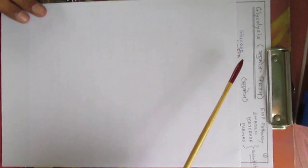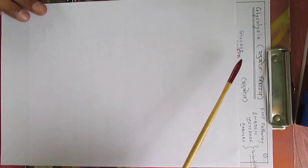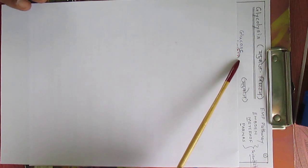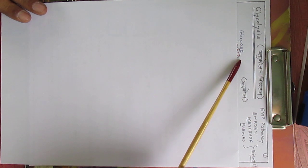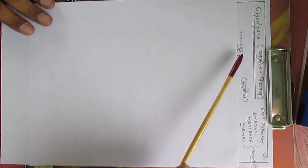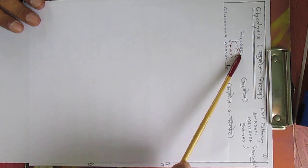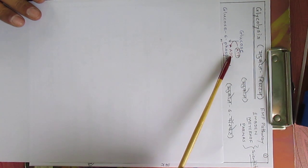In glycolysis, the glucose molecule undergoes 10 chain reactions in the cell cytoplasm, after which pyruvic acid is formed. This process takes place in the cytoplasm in the absence of oxygen, so it can also be considered as the anaerobic part of respiration or the anaerobic part of energy production.